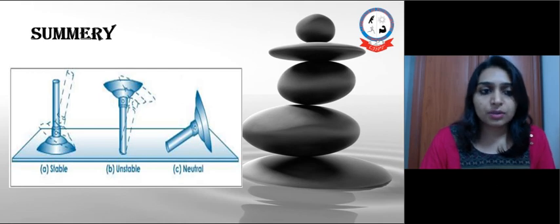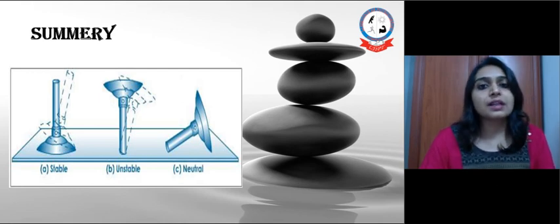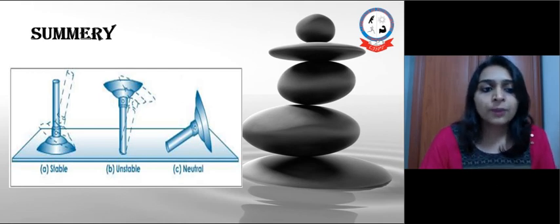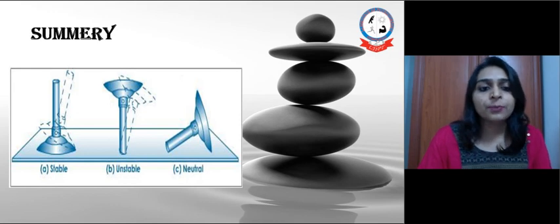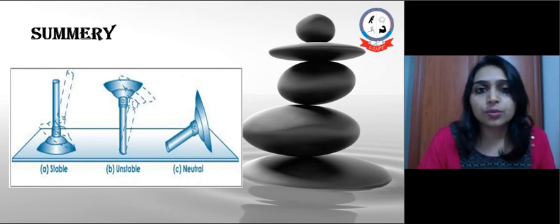The second is unstable equilibrium where we can see that COG is very high and base of support is small. If a small amount of force is applied, it can displace the body, then it will assume a new position.